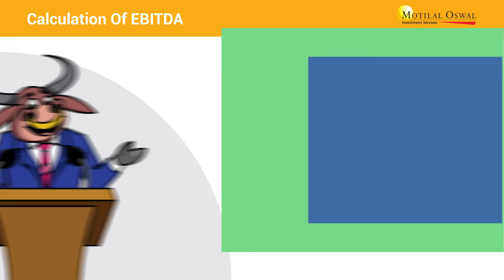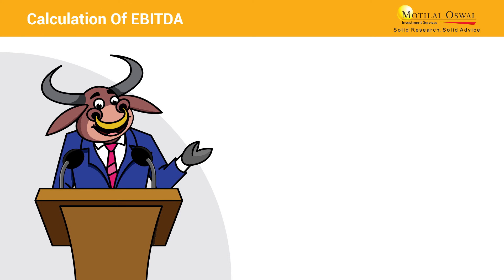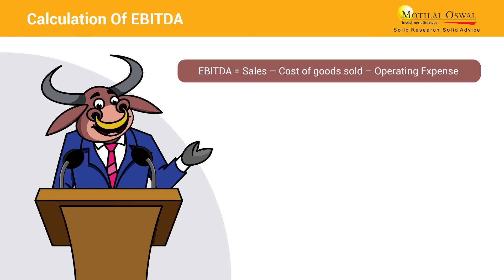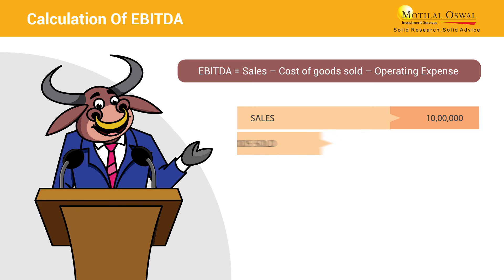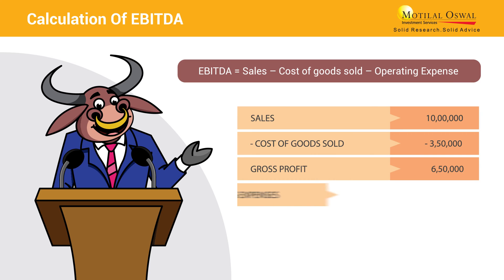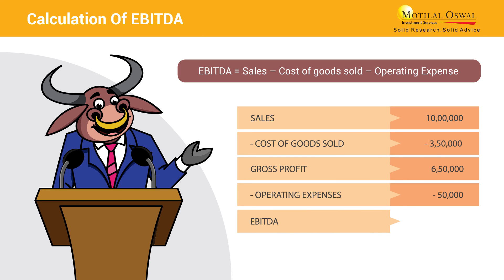To calculate EBITDA, we simply deduct cost of goods sold and operating expenses from sales. This process starts with sales, from which cost of goods sold are deducted to arrive at the gross profit. After this, operating expenses are deducted from the gross profit, and finally we arrive at EBITDA.